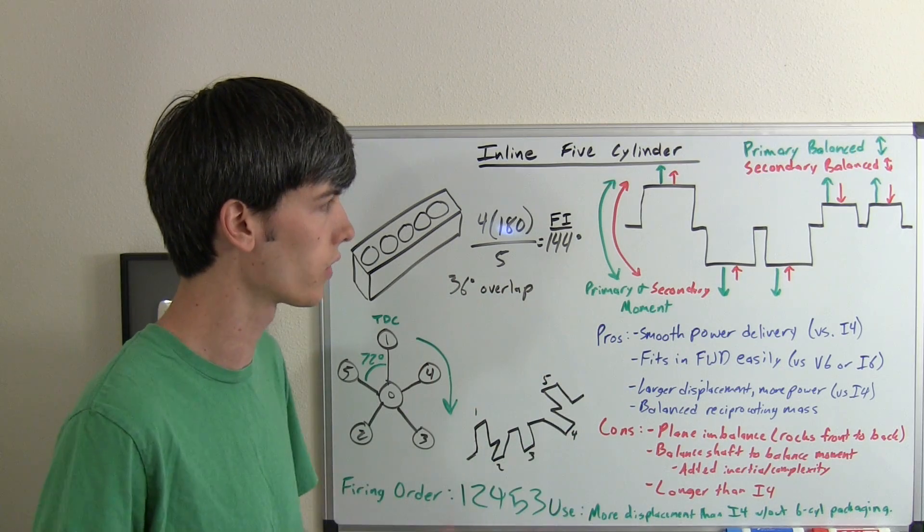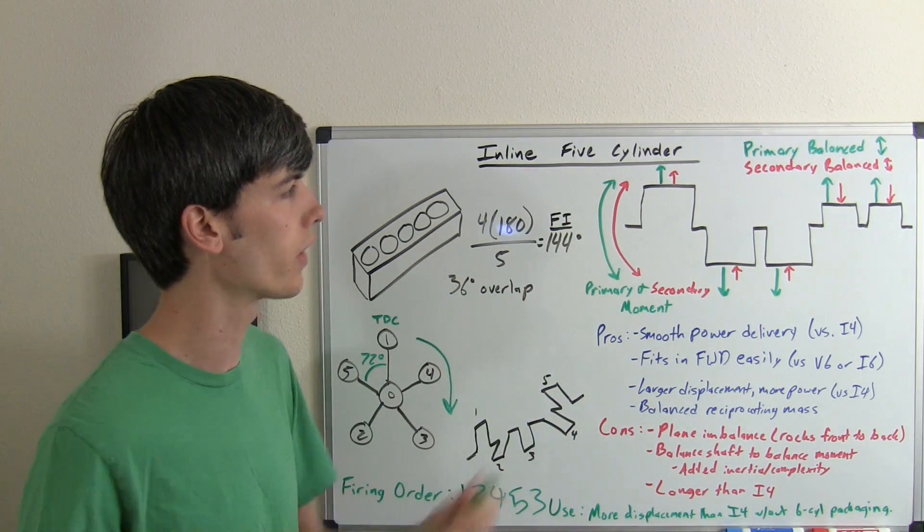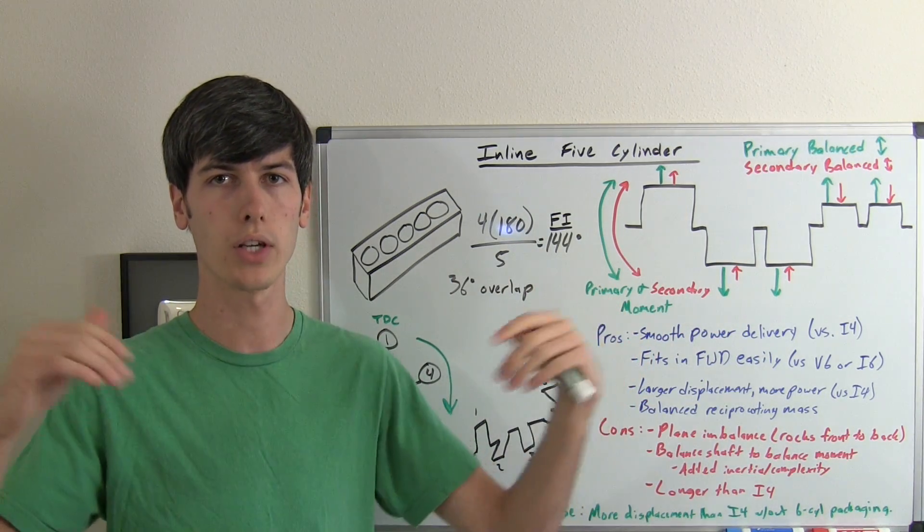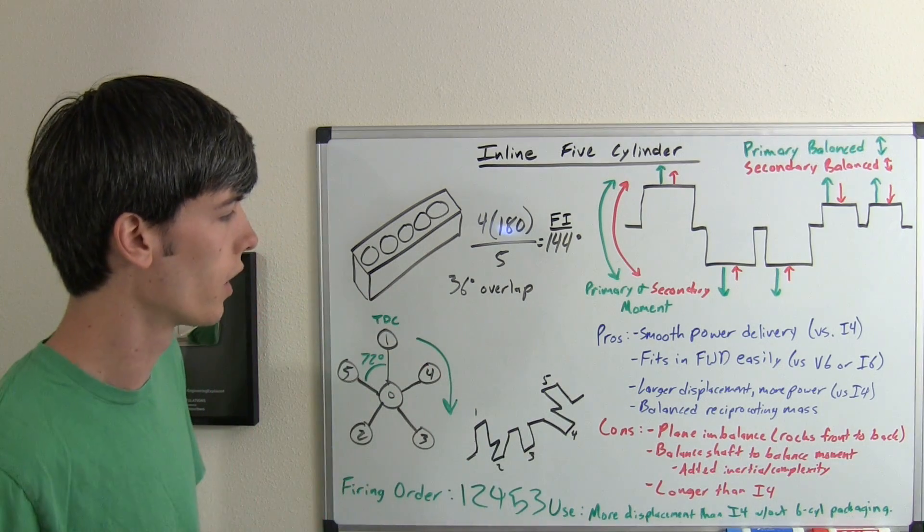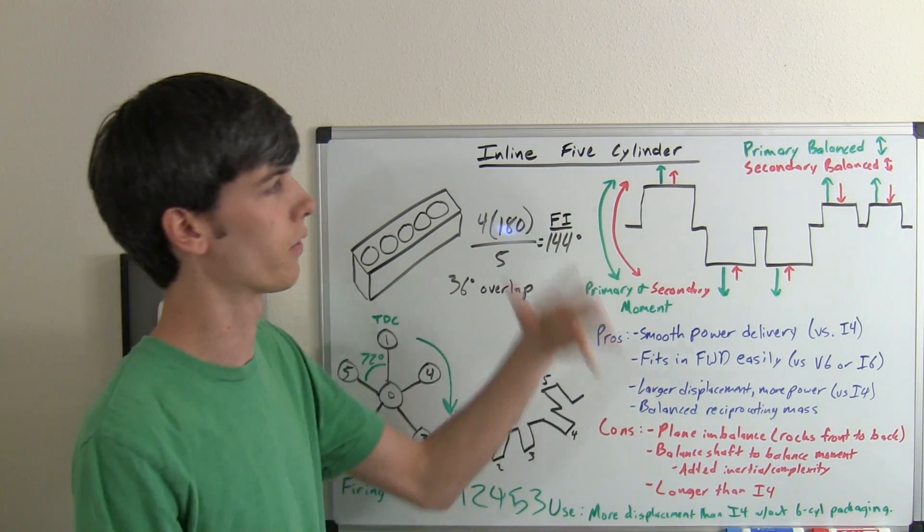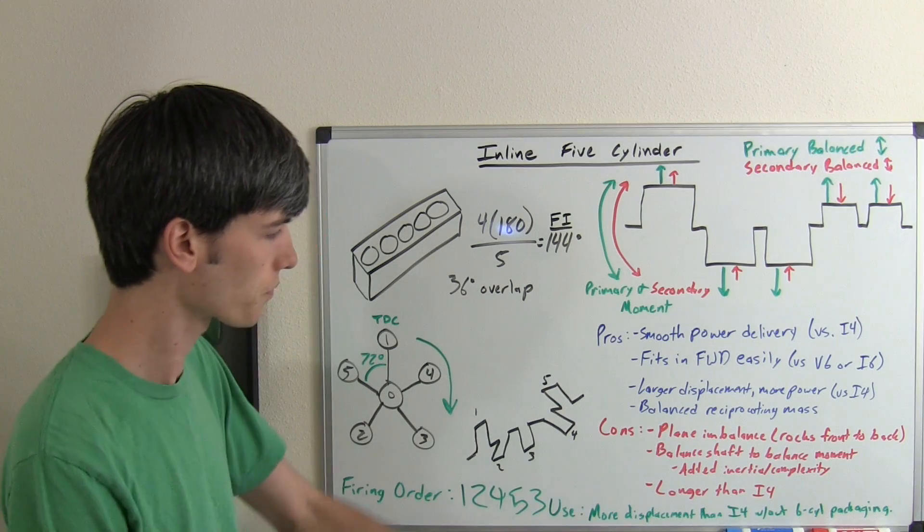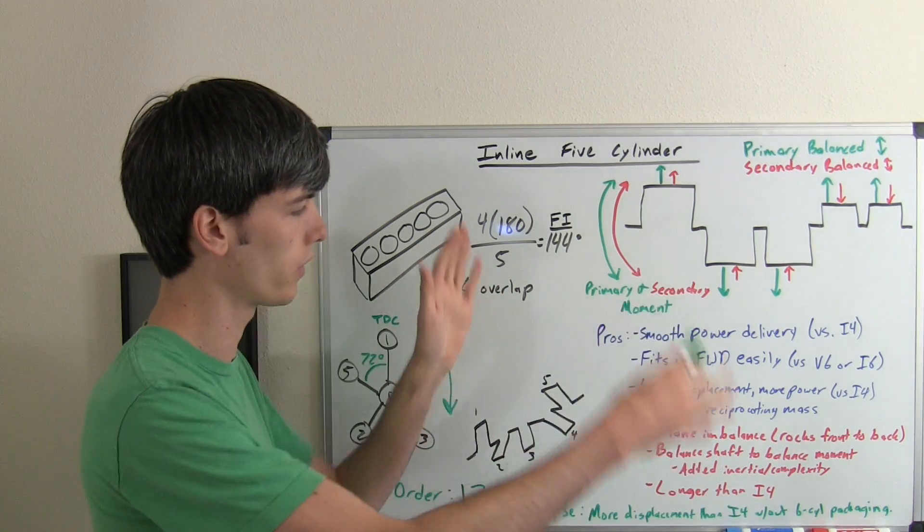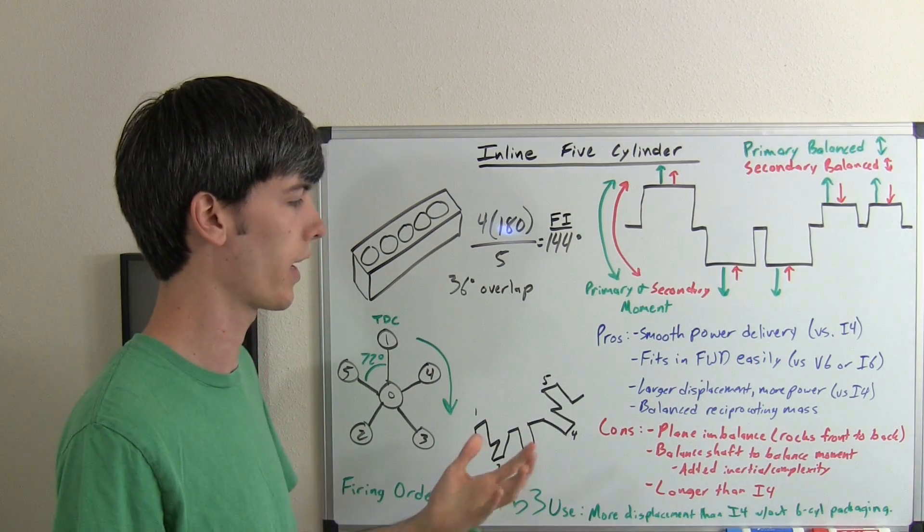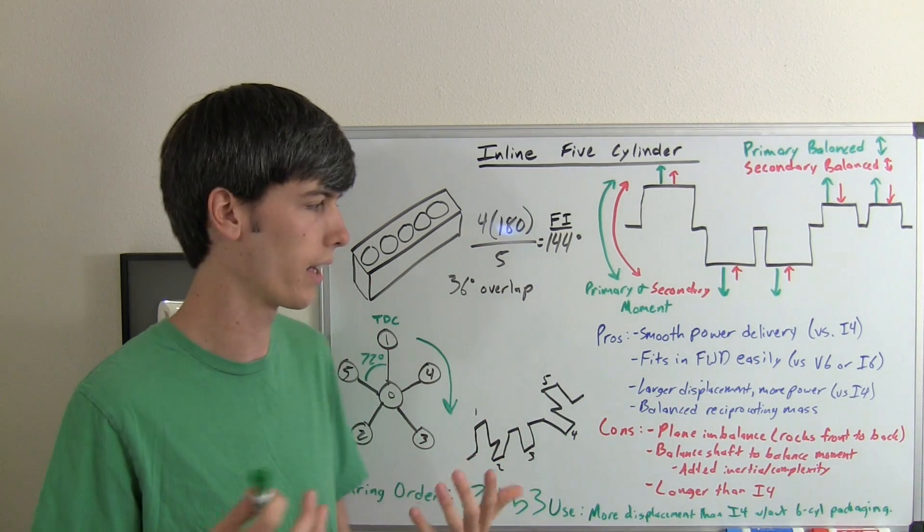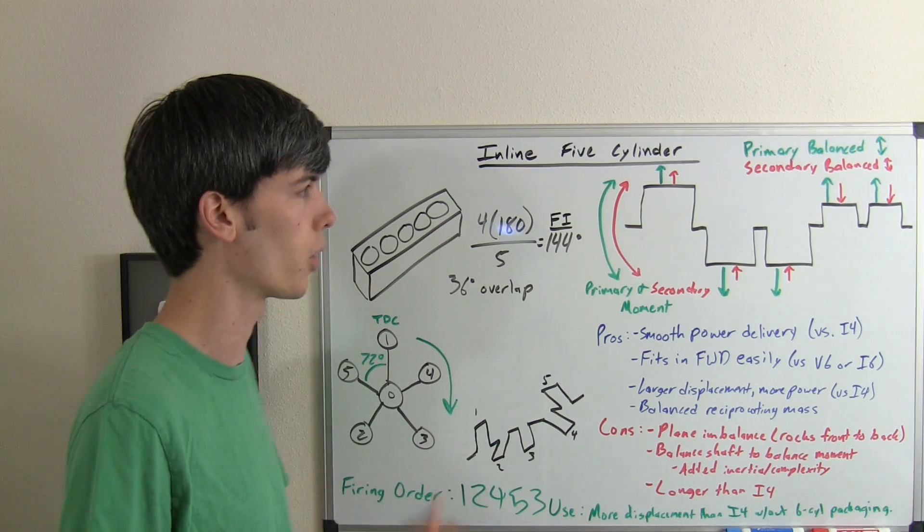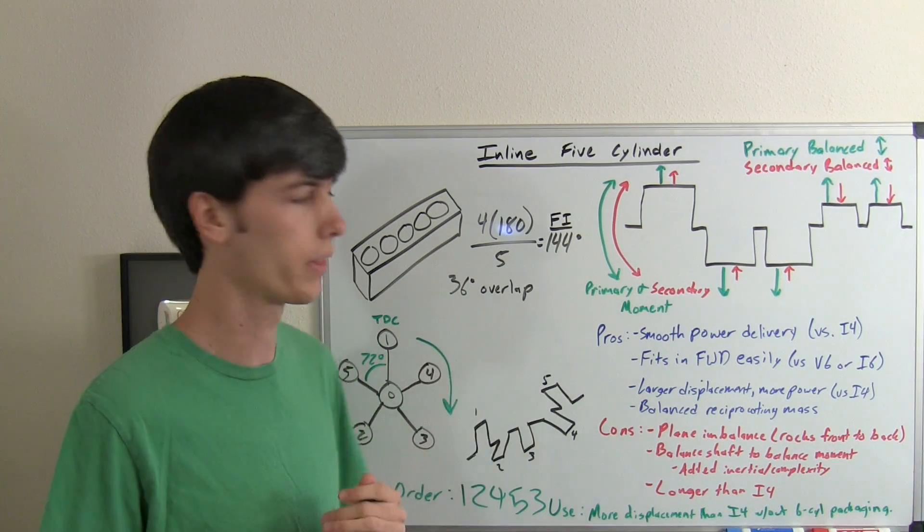Some of the downsides: plane imbalance. Inline four-cylinder doesn't have this plane imbalance, because the pistons on the outside move with each other, and the pistons on the inside move with each other, though it does have the vertical imbalance in the inline four. You will have to add a balancing shaft in order to counteract that moment. That's added inertia, rotational inertia, and added complexity. It's also longer than an inline four-cylinder, so packaging can be a concern with this type of engine.